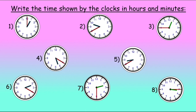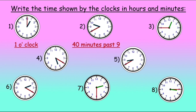Write the time shown by the clocks in hours and minutes. The first one is 1 o'clock. The second one — the minute hand is on 8 — means the time is 40 minutes past 9.